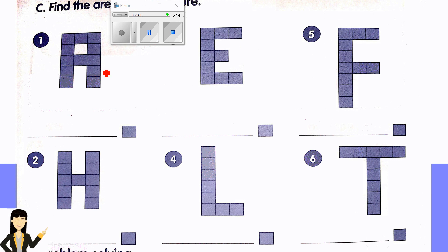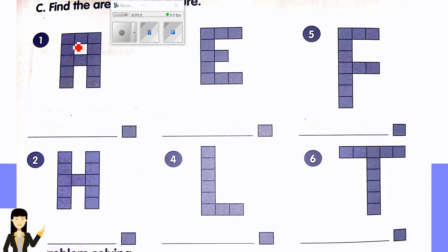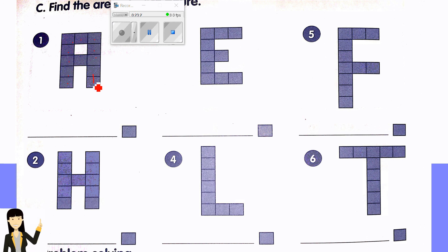Here, find the area by counting the squares inside. For example, number one: counting one through twelve gives 12 square units.